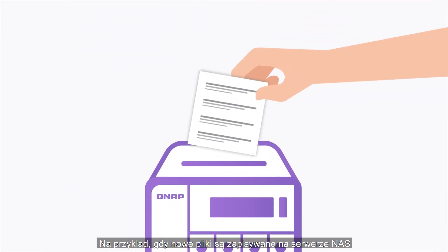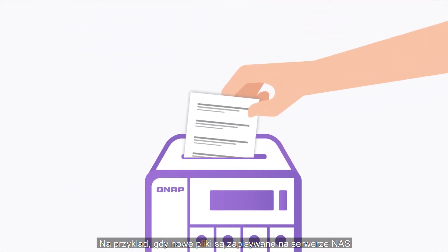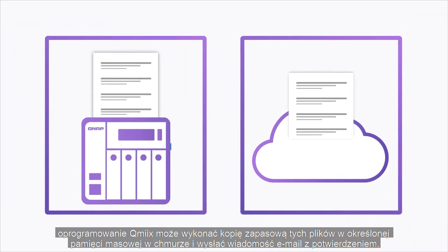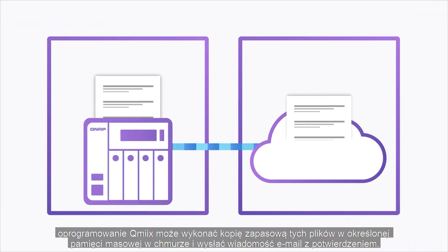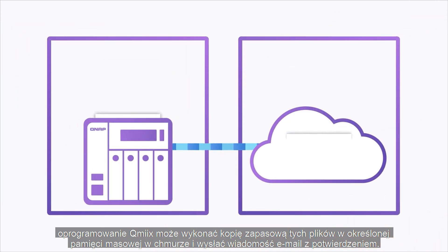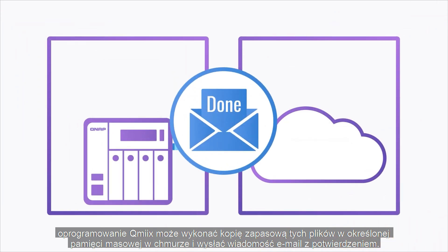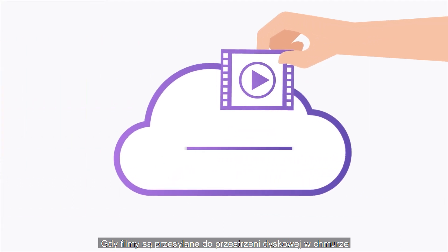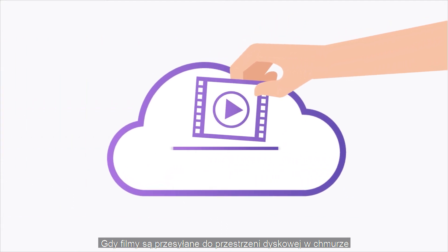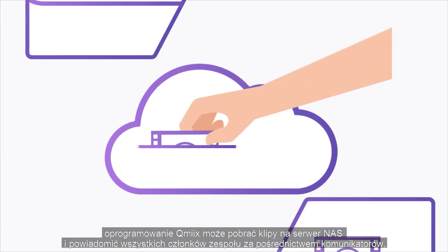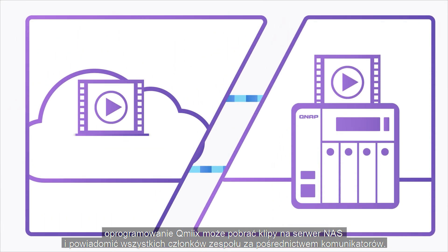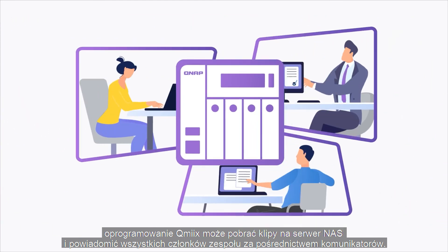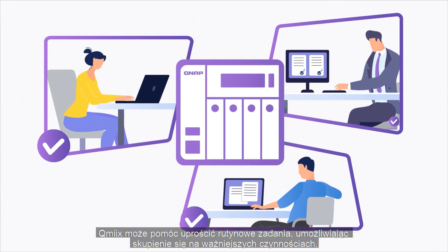For example, when new files are saved to your NAS, QMix can backup these files to specified cloud storage and send you a confirmation email. When videos are uploaded to your team cloud storage space, QMix can download the clips to a NAS and notify all members via Messenger apps.